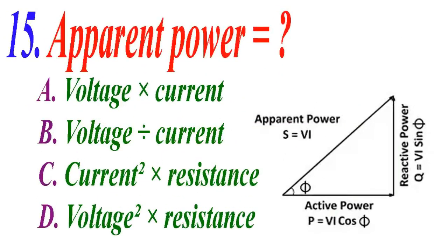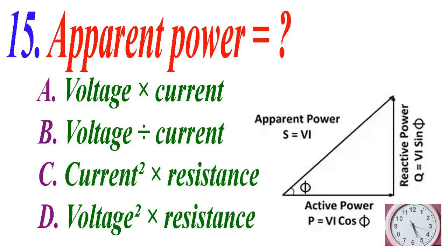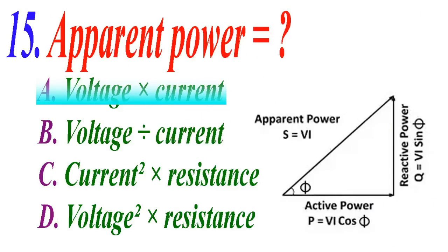Apparent power is equal to: A voltage multiplied by current, B voltage divided by current, C voltage squared times resistance, D voltage squared times resistance. The correct answer is A, voltage multiplied by current.